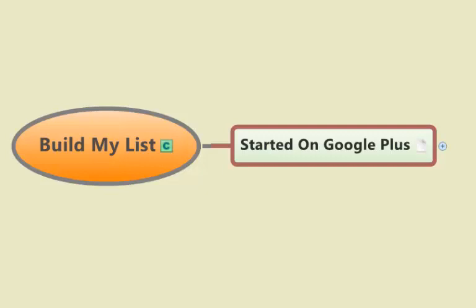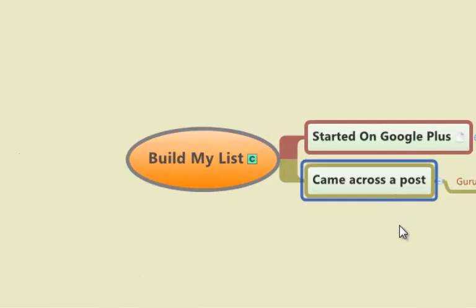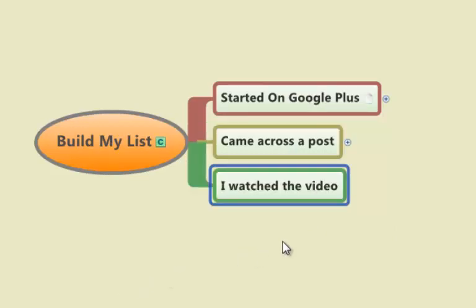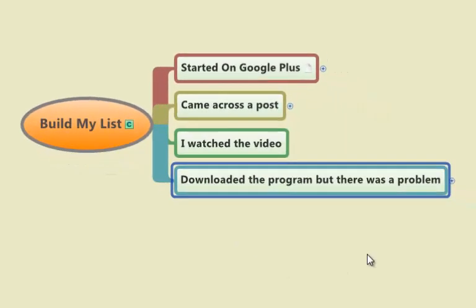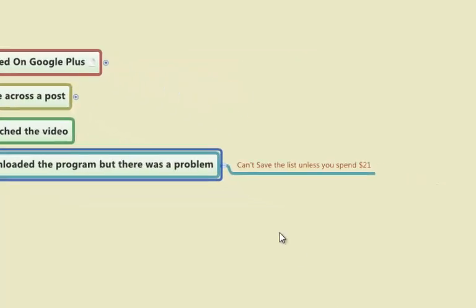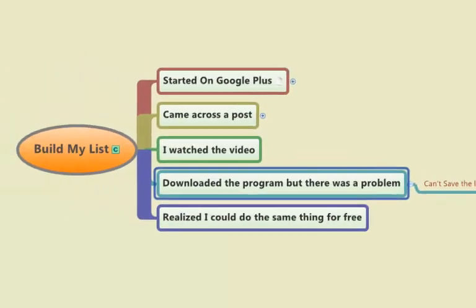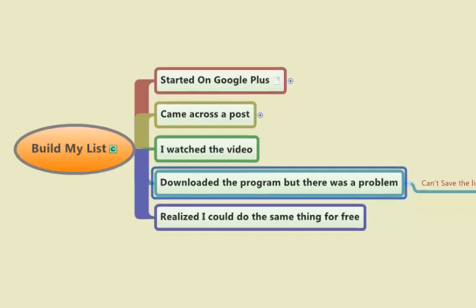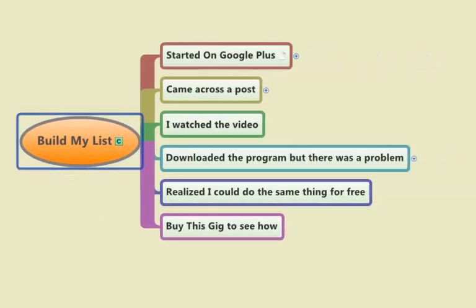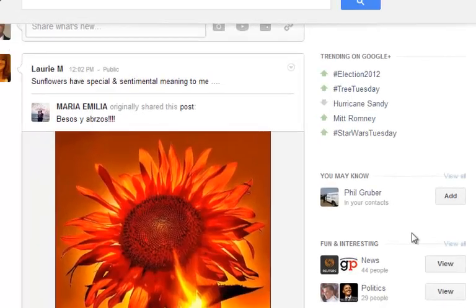Basically, what I wanted to do was build a list. I did a search on Google Plus on my account for "build my list" with quotations, and I came across a post that had a link for Guru List Builder. I watched the video presented there, saw everything it did, and downloaded the program. But there was a problem — you couldn't save the list you built unless you spent 21 bucks. So I realized I could do the same thing for free. If you buy this gig, that's exactly what I'm going to show you how to do.